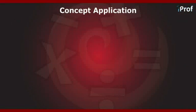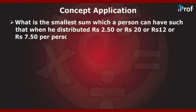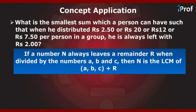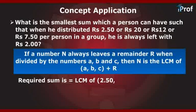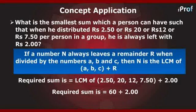Let us now go through another question. What is the smallest sum which a person can have such that when he distributes Rs. 2.50, or Rs. 20, or Rs. 12, or Rs. 7.50 per person in a group, he is always left with Rs. 2? The required sum is the LCM of 2.50, 20, 12, and 7.50, plus 2. Further reducing, we get the required sum to be equal to 60 + 2. Hence, the required sum is equal to 62.